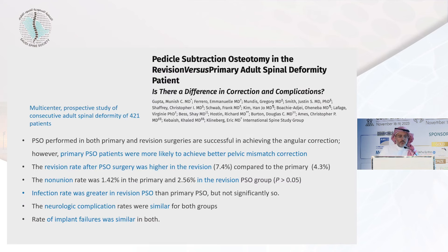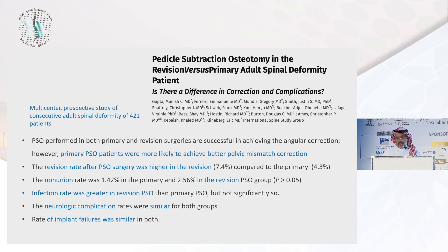A paper by Cubage discusses pedicle subtraction osteotomy in revision versus primary adult spine deformity. Both achieve successful angular correction, but primary PSO patients were more likely to achieve better pelvic mismatch correction. The revision rate after PSO is higher in revision cases, nonunion is higher in revision, and infection is greater with revision PSO compared to primary. However, neurological complications and implant failure were the same.